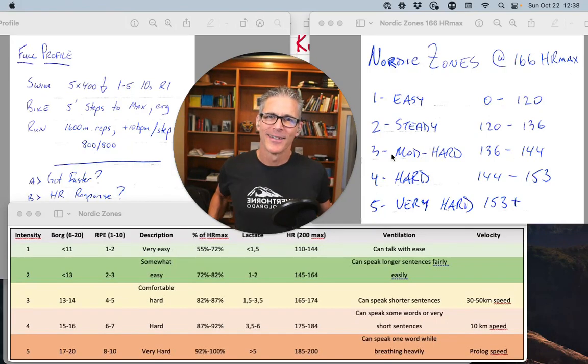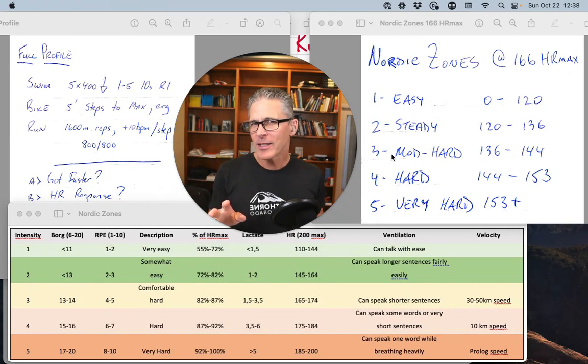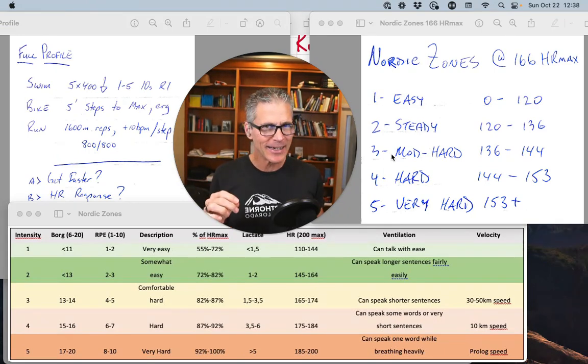Welcome back. This is determining zone 5. Up to this point for zones 1 to 4, we've been using heart rate and lactate to determine the zones. For zone 5, I recommend you determine the pace and the power directly, and we're going to get into how we do that.